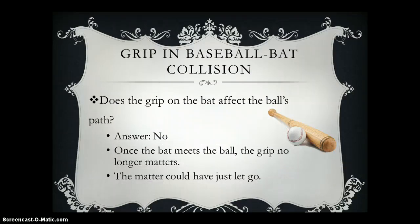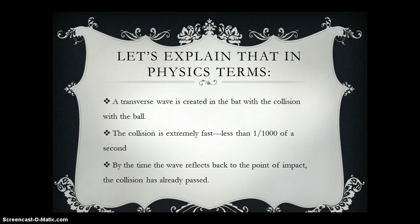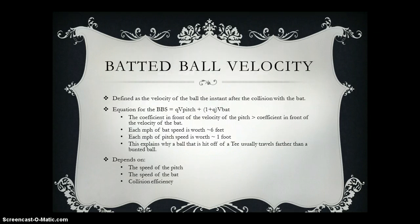The grip doesn't really affect the ball's path. So once the bat meets the ball, the person holding it might as well just let go. Explained in physics terms, a transverse wave is created in the bat with the collision with the ball. The collision is extremely fast — less than one one-thousandth of a second — so by the time the wave reflects back to the point of impact, the collision has already passed.